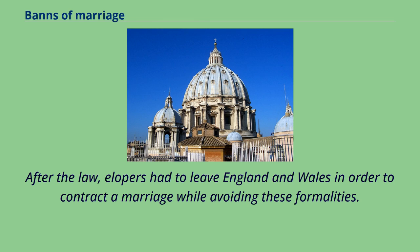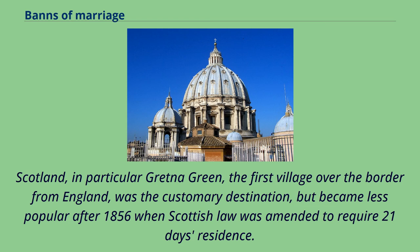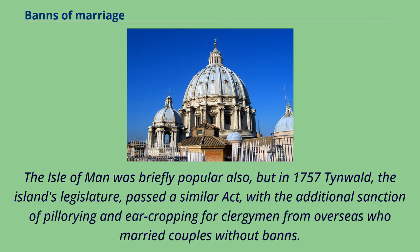After the law, elopers had to leave England and Wales in order to contract a marriage while avoiding these formalities. Scotland, in particular Gretna Green, the first village over the border from England, was the customary destination, but became less popular after 1856 when Scottish law was amended to require 21 days' residence. The Isle of Man was briefly popular also, but in 1757 Tynwald, the island's legislature, passed a similar act, with the additional sanction of pillorying and ear-cropping for clergymen from overseas who married couples without banns.